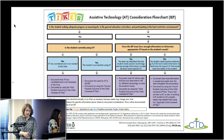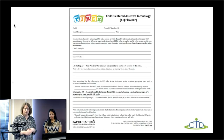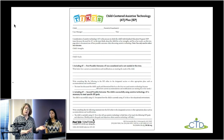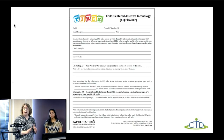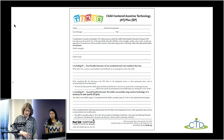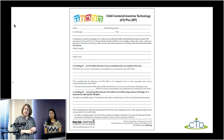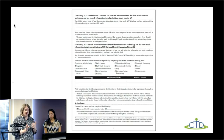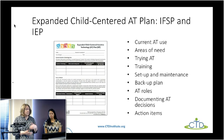The second document is called the Child-Centered AT Plan — it's the documentation guide. You've gone through the flowchart, come up with an outcome, and it gives you an idea of how you could document that decision in either the IFSP or the IEP. There are two versions — one for the IFSP and one for the IEP — they're very similar and mostly differ in language and where you document. This allows the team to all be on the same page about the decision made.